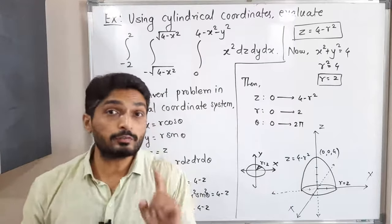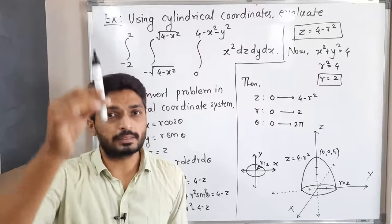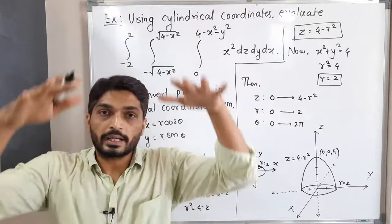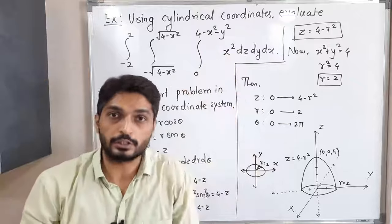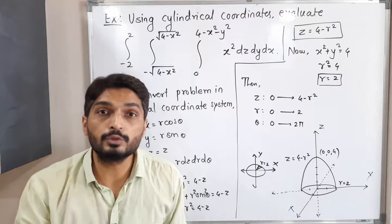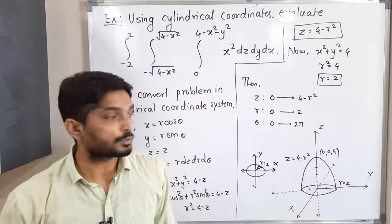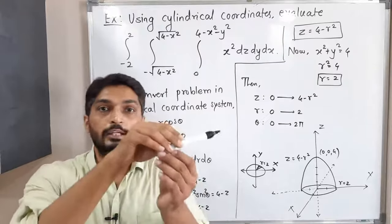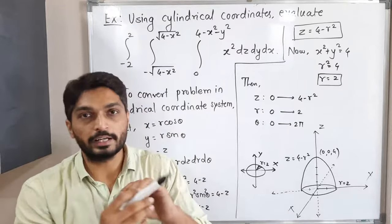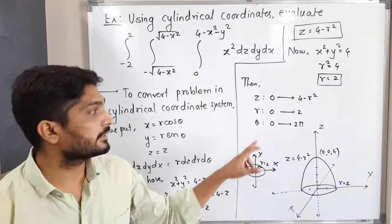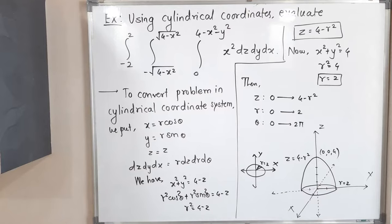To summarize: for z limits, consider a vertical strip bounded below and above; for r and θ limits, take the projection in the xy-plane and use the polar coordinate technique. A strip starts at the origin and sweeps anticlockwise to cover the full region. Limits are: z from 0 to 4 - r², r from 0 to 2, θ from 0 to 2π.